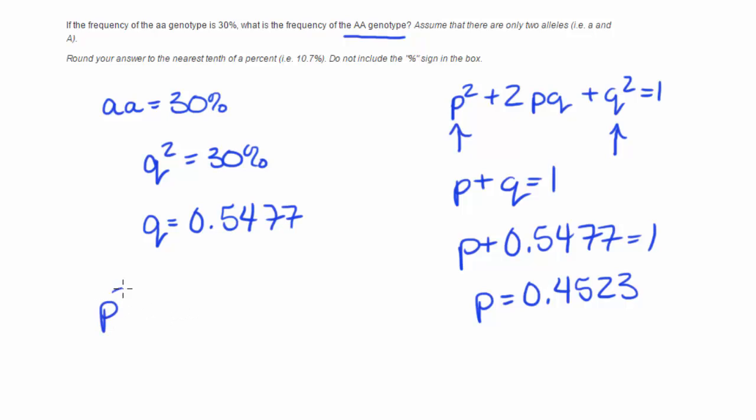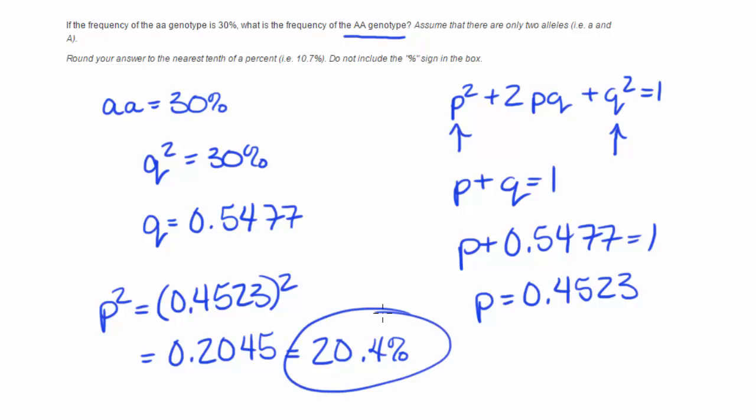So we would want to figure out P squared, which we know what P is now. So I'm going to take my value for P and square that. And when you square that, that's going to be equal to 0.2045. And then if we want to convert that into a percent, we just multiply by 100. So that's going to be equal to 20.4%. And that would be our answer to this question.